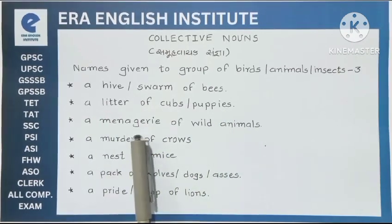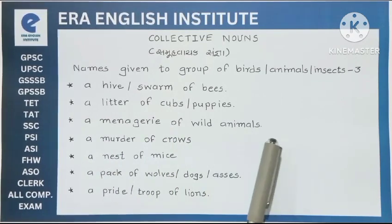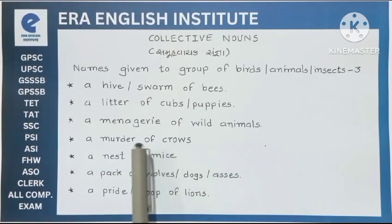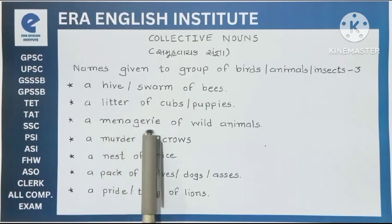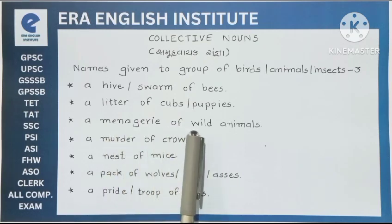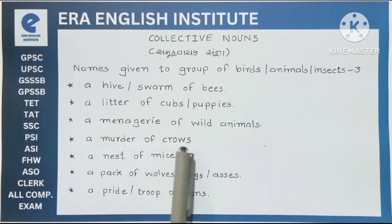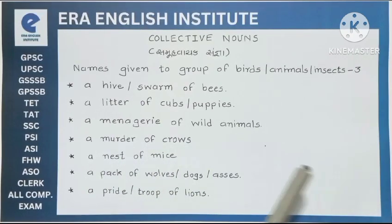Next one: a menagerie of wild animals. जंगली जानवरों के बड़े समूह के लिए menagerie collective noun उपयोग होता है. Next: a murder of crows. कागड़ाओं के झुंड को murder collective noun दिया जाता है.